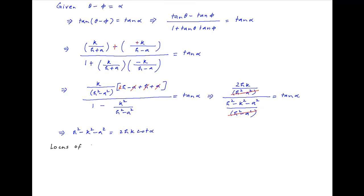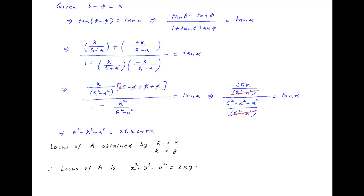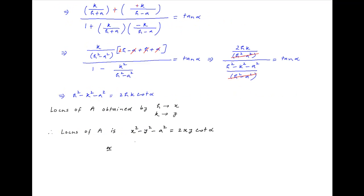Now the locus of vertex A with coordinates (h, k) is obtained by replacing h with x and k with y in the above equation. Therefore, the locus of A is x² − y² − a² = 2xy · cot alpha, or equivalently x² − y² − 2xy · cot alpha = a², which is the required answer.